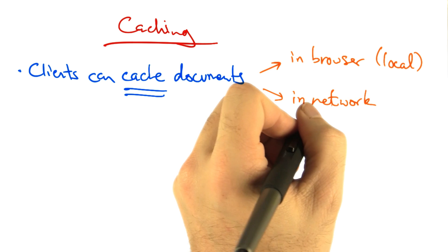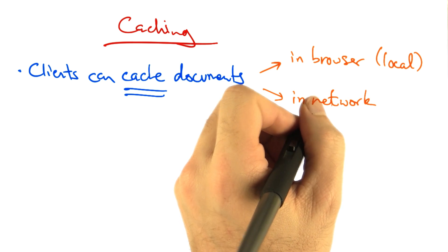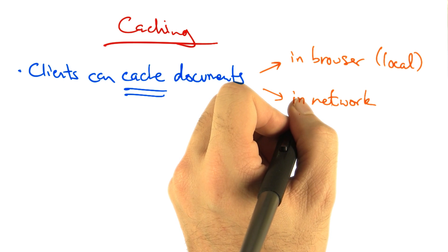Later we'll also look at how content distribution networks are a special type of web cache that can be used to improve performance.